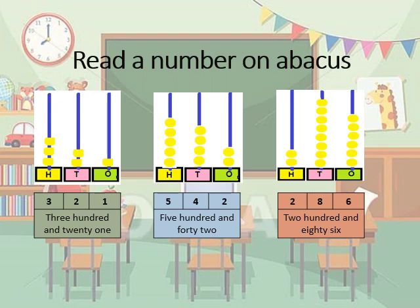Write the numbers and number names, both. In the second one, count the beads in the 100s place — that is 5. Count the beads in the 10s place — that is 4. In the 1s place, how many beads are there? It is 2. So the number we have got is 542. In the same way, count the beads of all the questions and write the numbers and number names, both.